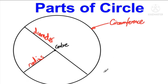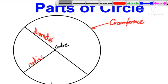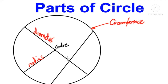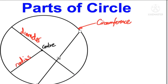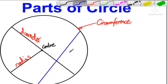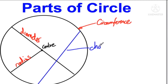Now, what is circumference? The distance right around the circle is called its circumference, or we can say it is the perimeter of the circle. Next, a line segment joining any two points on a circle is called a chord of that circle. The line that passes through the center is the diameter, and the line that does not pass through the center but touches the circumference is the chord.